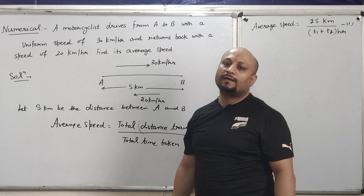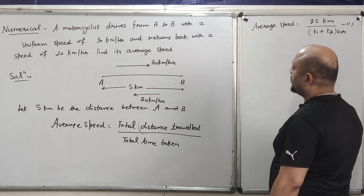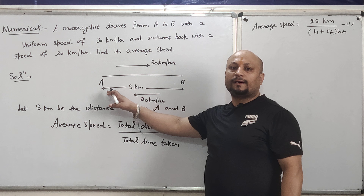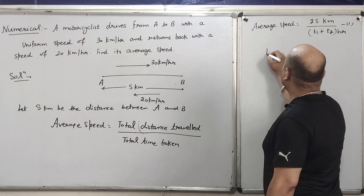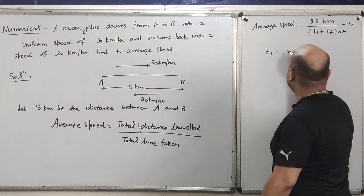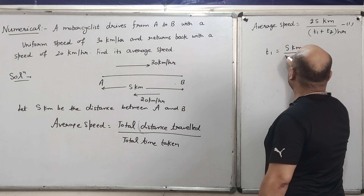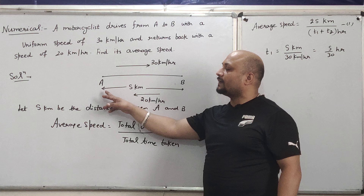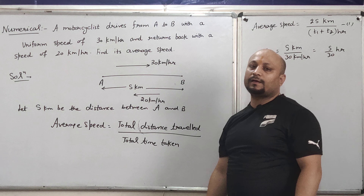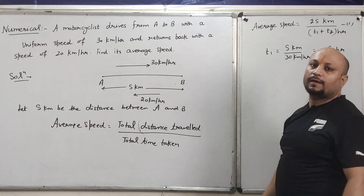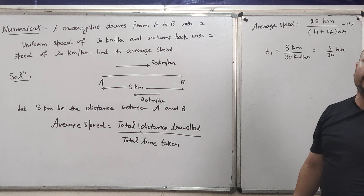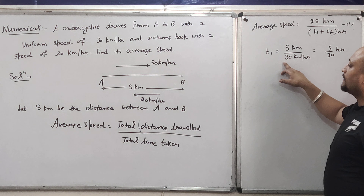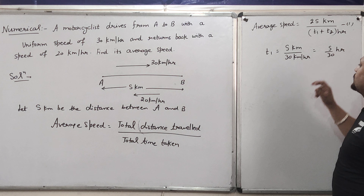This is the formula for average speed. Now we need to calculate T1 and T2. What is T1? As per formula, velocity = distance / time, so time = distance / velocity. The distance traveled from A to B is S km, and the velocity is 30 km/hr. Therefore T1 = S/30 hours.